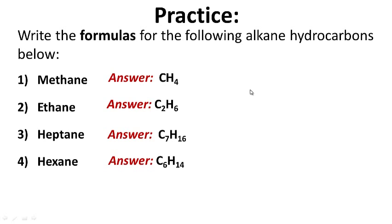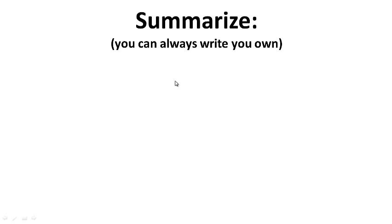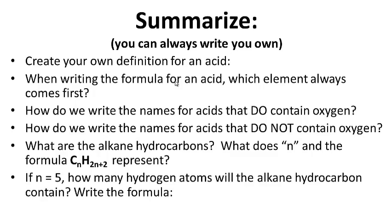Go ahead and summarize. Create your own definition for an acid. When writing the formula for an acid, which element always comes first? How do we write the names for acids that do contain oxygen, and how do we write the names for acids that do not contain oxygen? What are the alkane hydrocarbons, and what does N in the formula CₙH₂ₙ₊₂ represent? If N = 5, how many hydrogen atoms will the alkane hydrocarbon contain? Write the formula. Pause this while you do this — we'll see you next time.